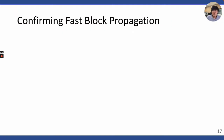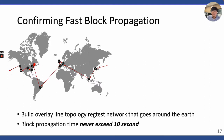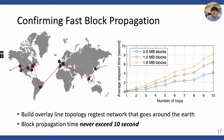To double-check our result of fast block propagation, we measured block traveling time in a regtest network. We deployed 11 Bitcoin Core nodes all around the world and built a 10-hop overlay line topology network that goes around the Earth by connecting these nodes. We then generated a block at the start of this line topology and measured the traveling time. We confirmed that block propagation time never exceeds 10 seconds regardless of block data size.